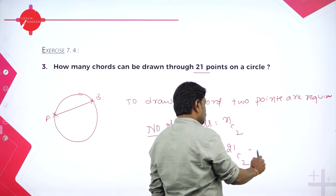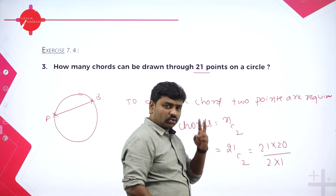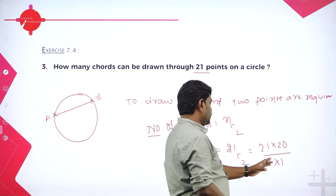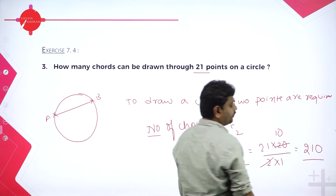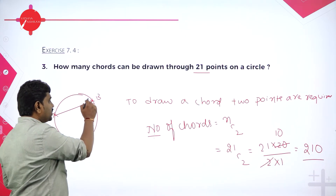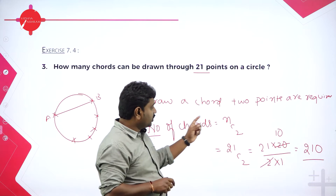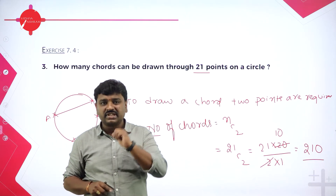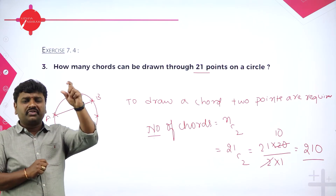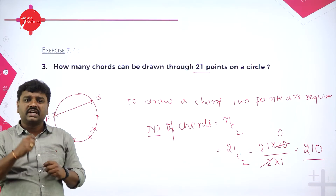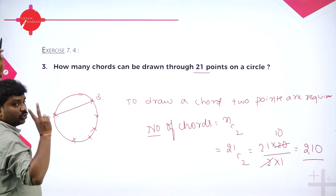How to expand 21C2? That is 21 into 20 divided by 2 into 1 — from 21, two terms decreasing in numerator, denominator 2 factorial. Simplify: 2 ones are 2, 10 twos — so 210 chords. NCR means out of N things selecting R things. Out of 21 points selecting 2 can be done in 21C2 ways. To draw a chord we need 2 points.